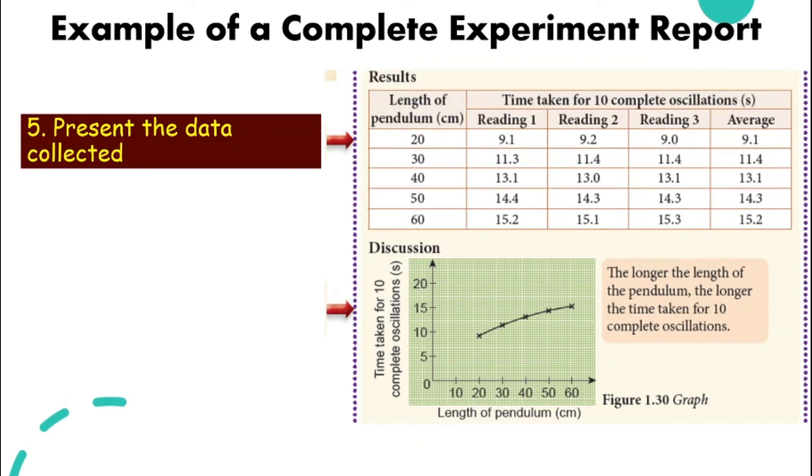Next, we will have our results. In this report, it is in a table form. We record it. Remember, look at this one: there's reading one, reading two, reading three. The experiment is repeated three times to get three sets of data so they can find the average. So your data is a lot more accurate. This is step five: present the data collected.